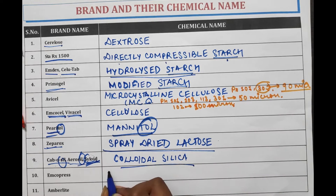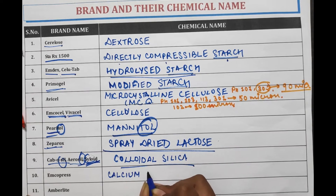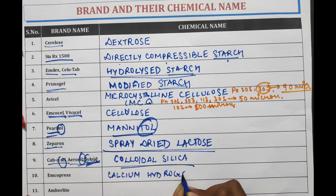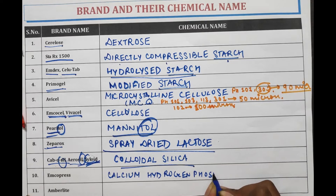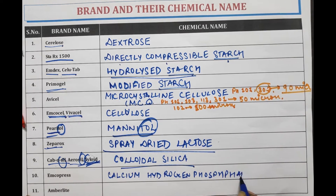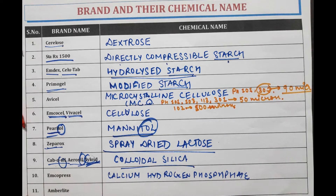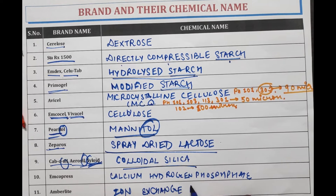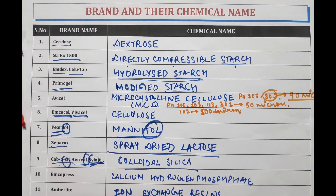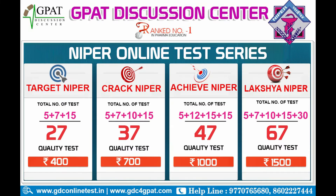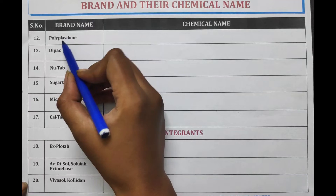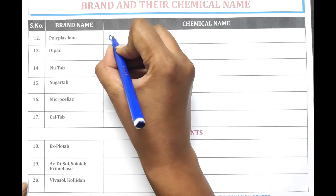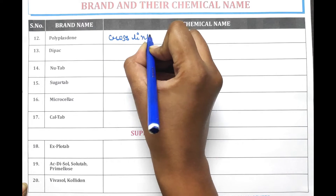M-Compress is the brand name of Calcium Hydrogen Phosphate. Amberlite is the brand name of ion exchange resins. There are different types of ion exchange resins available which are cationic and anionic in nature. Polyplastone is the brand name of cross-linked PVP, that is Polyvinylpyrrolidone.